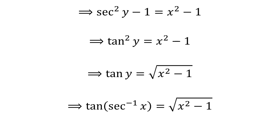As we had assumed y is equal to arc secant of x, this implies tangent of arc secant of x is equal to square root of square of x minus 1.